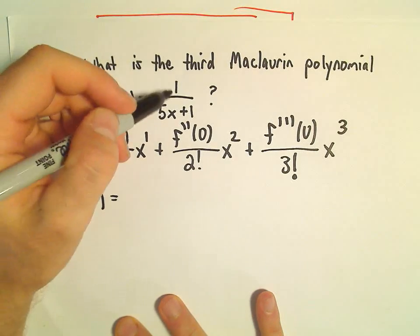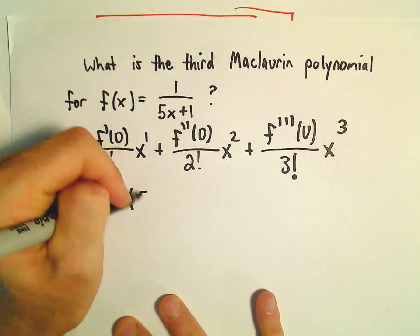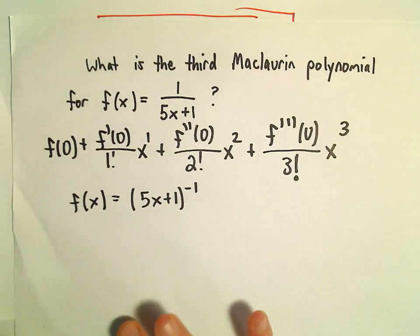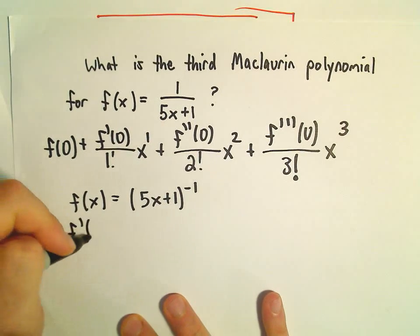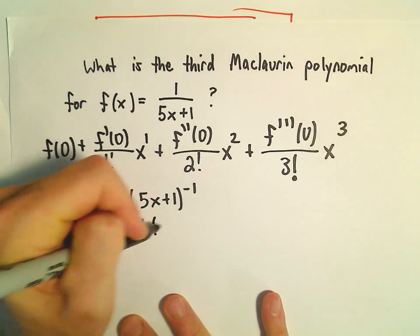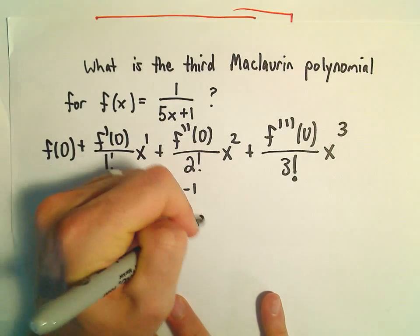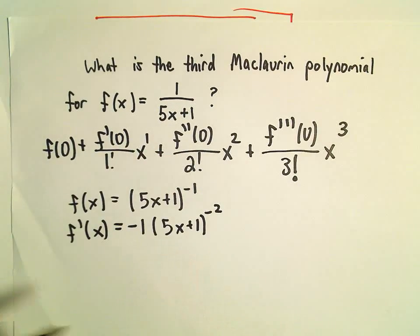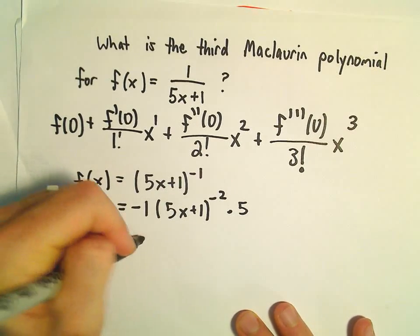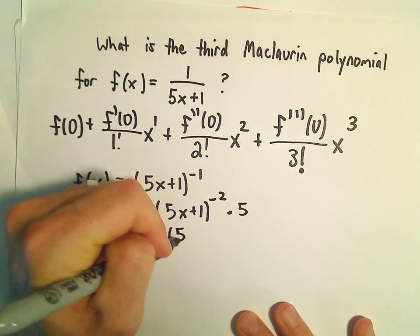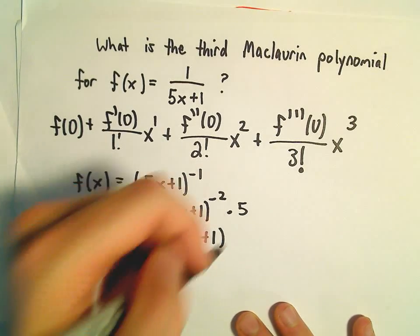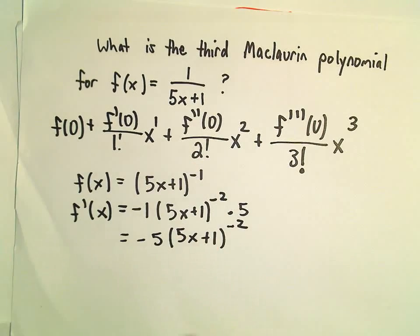We can write 1/(5x+1) as (5x+1) to the negative first power. So our first derivative, we'll get negative 1 times (5x+1) to the negative second. But then we have to take the derivative of the inside, so we'll get negative 5 times (5x+1) to the negative 2 power.